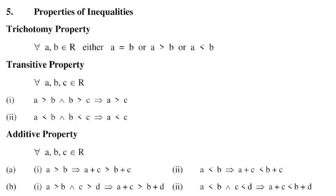First, the trichotomy property: for all a belonging to real numbers, either a is equal to b, or a is greater than b, or a is less than b. That is the trichotomy property of inequalities.